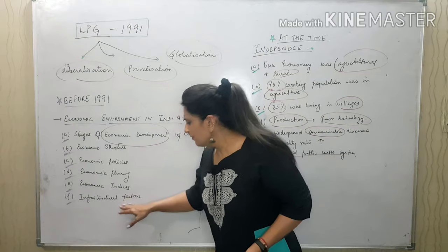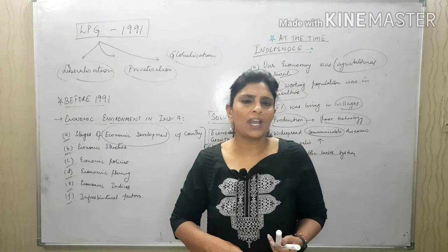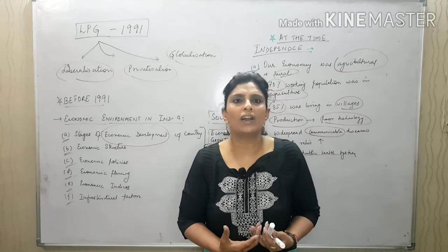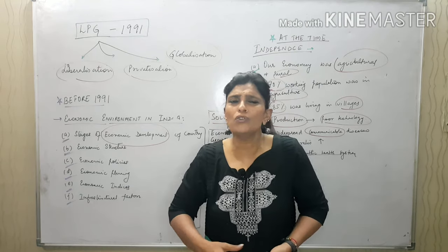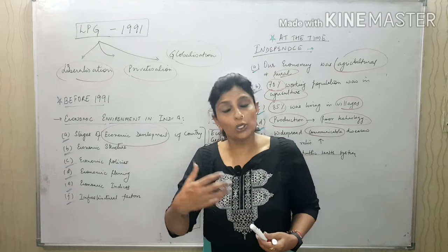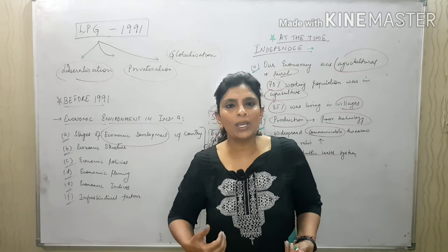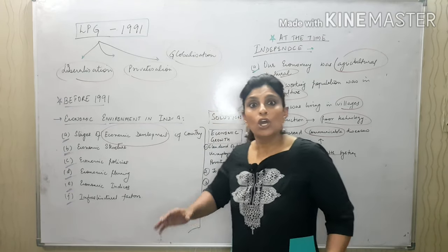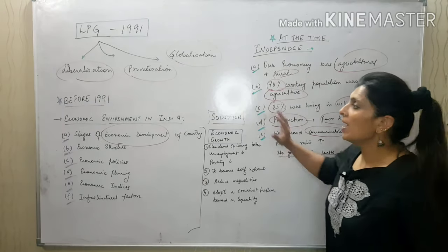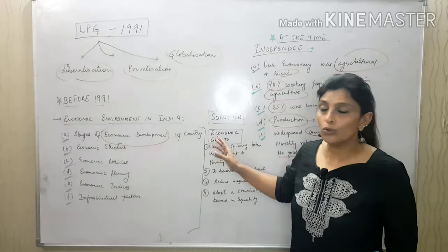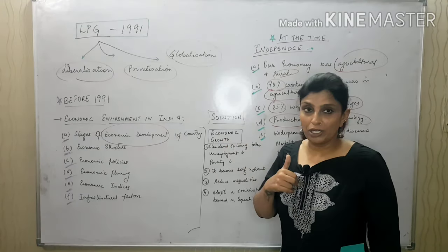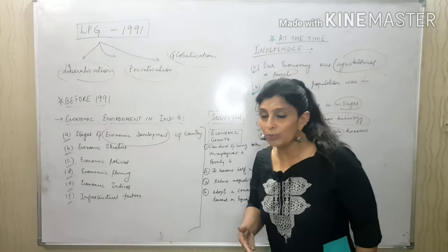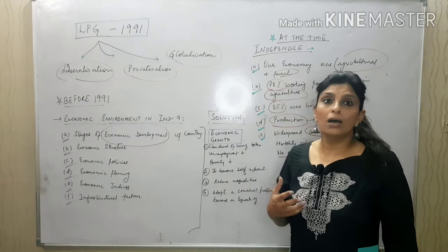Infrastructure factors showed a lack of schools, hospitals, and well-developed roads — more kaccha houses than pucca houses. So many things which we study in economics or SST relate to the condition at that time. Before 1991, these were the problems. The solutions being looked at included economic growth, better standard of living, and reducing unemployment — giving people better access to income and money.